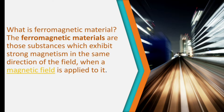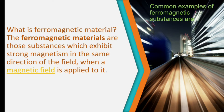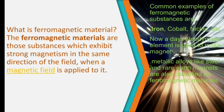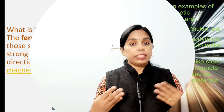Common examples of ferromagnetic substances are iron, nickel, cobalt, etc. Nowadays neodymium element is used to make magnets. Metallic alloys like steel and rare earth magnets are also classified as ferromagnetic materials. What gets attracted or repelled by a magnet is known as a magnetic material.